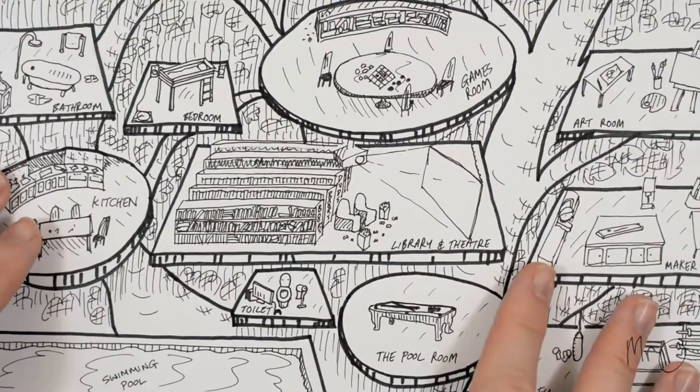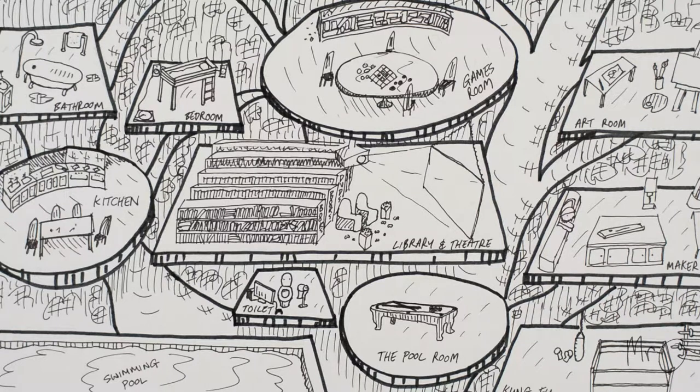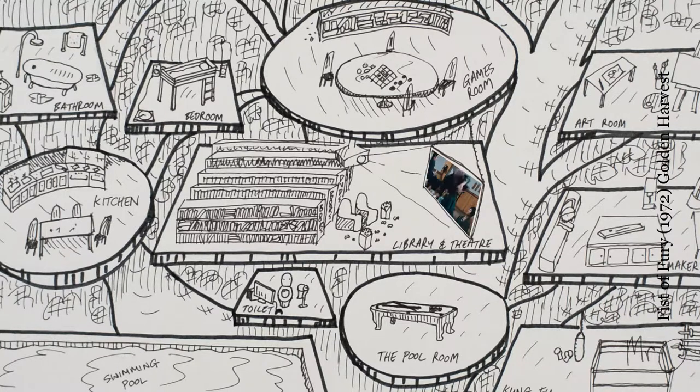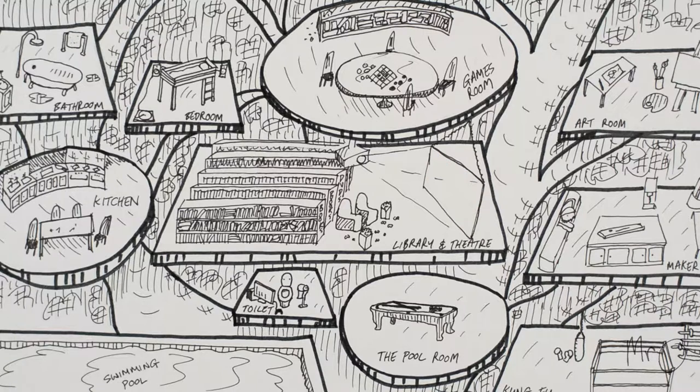And the final room, number 13, is the library and theatre. You can see we've got a huge library full of books. You can take books out and sit anywhere you want, even sit in different places in the treehouse and read. Loads and loads of books. And also, of course, we've got a big projector and a big screen, some nice comfortable chairs to watch lots of movies. We've got popcorn there as well. I think that would be pretty perfect.